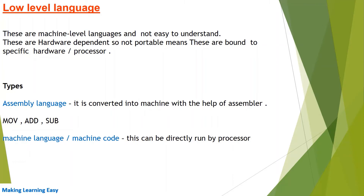When we write in a high level language we use English words, so it is easy to read and understand. But when we write a program in machine code using 0s and 1s, it is very difficult for a programmer to understand the meaning, and even if able to, it takes considerable time.